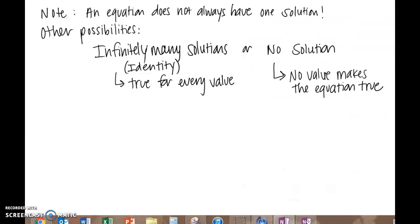So far in this lesson we have only looked at equations that have one solution. However, you may remember that equations do not always have to have one solution. The other possibilities are either having infinitely many solutions, which is also known as the identity, and that means that the equation is true for every value that you plug in or substitute. And the other option is no solution, which means no matter what number you plug in for that variable, the equation will not be made true.